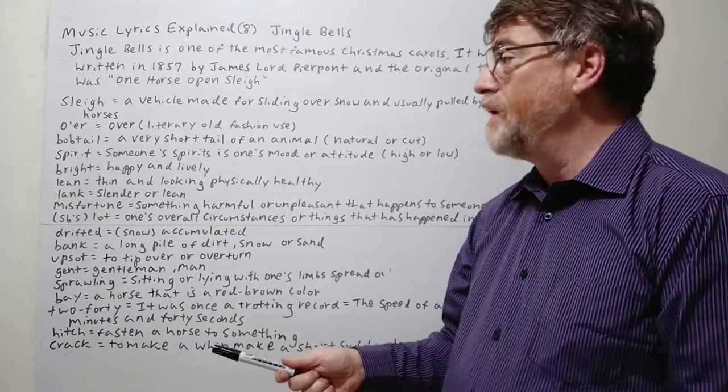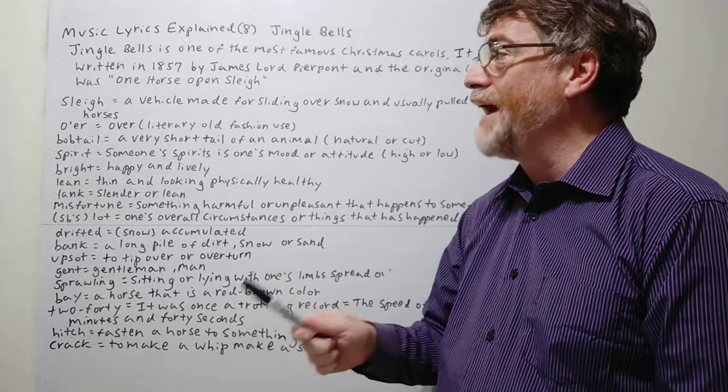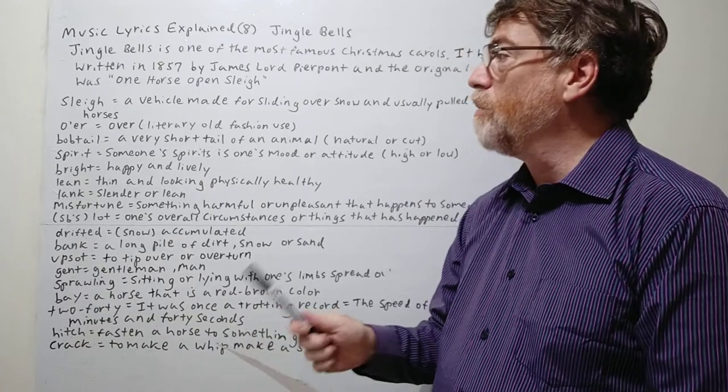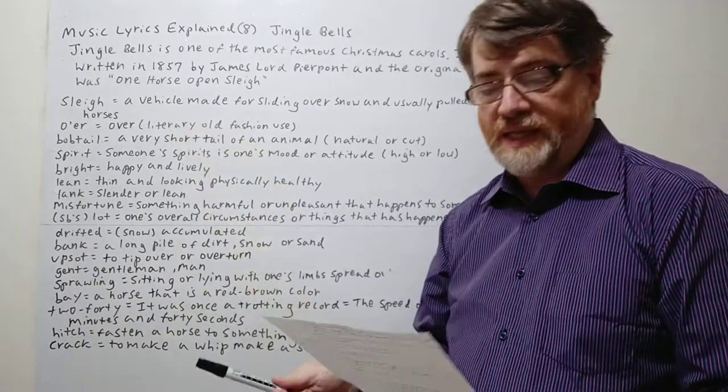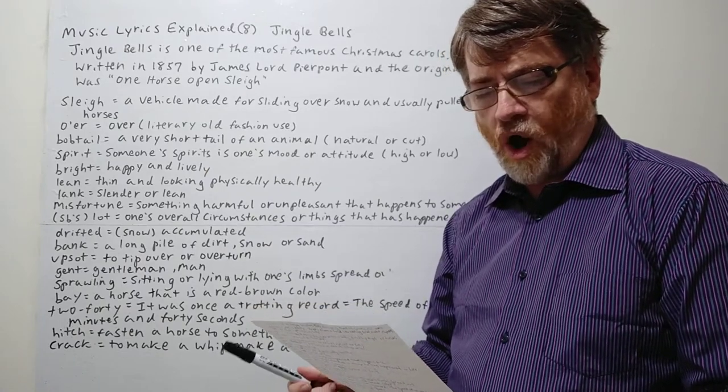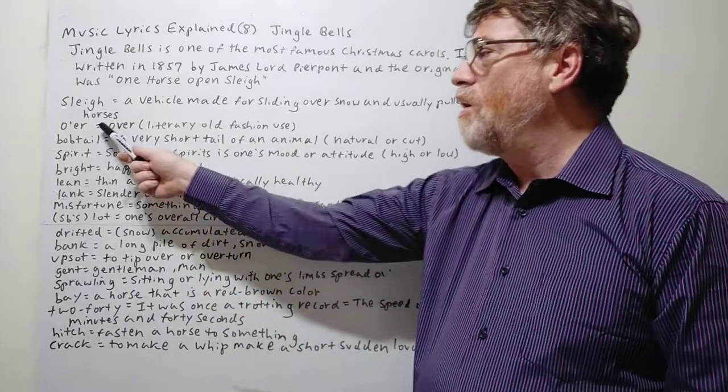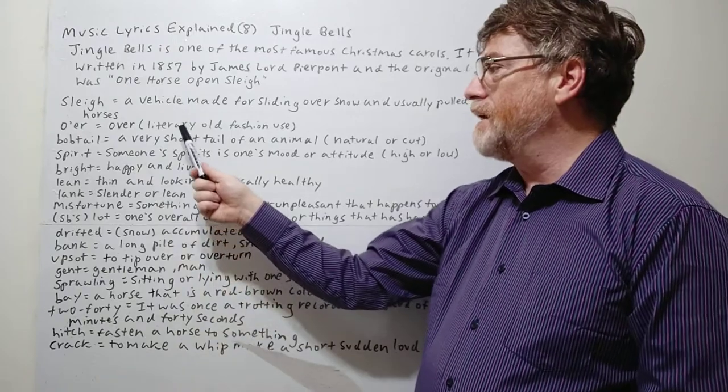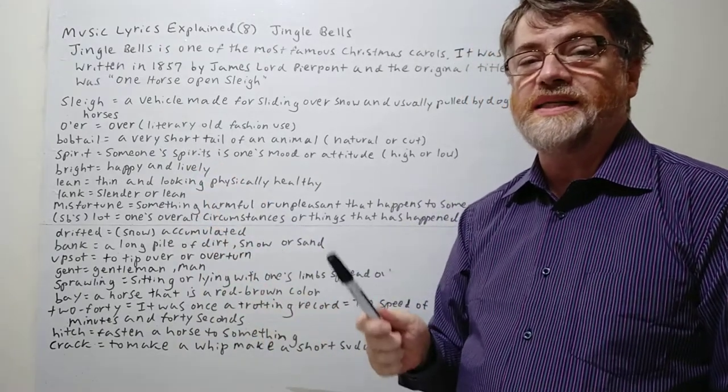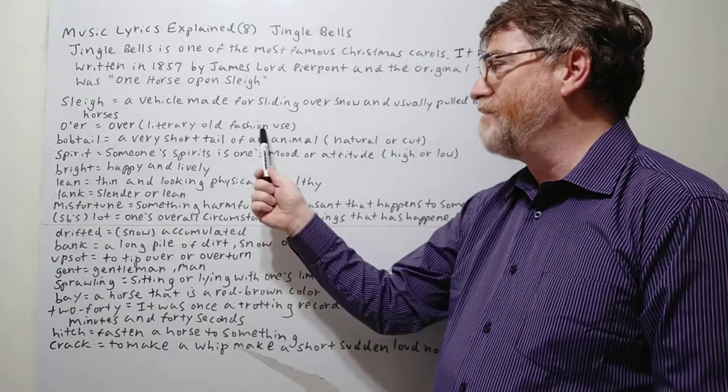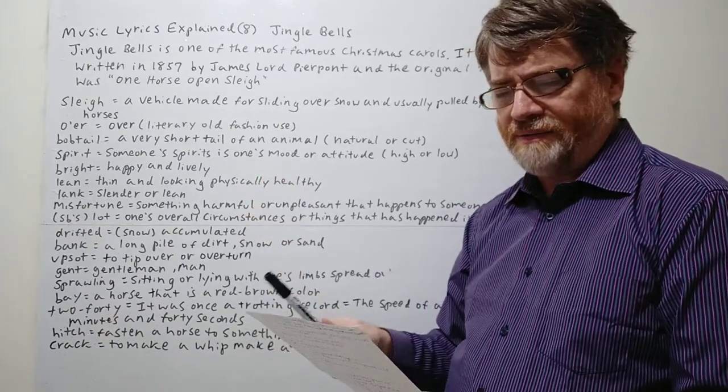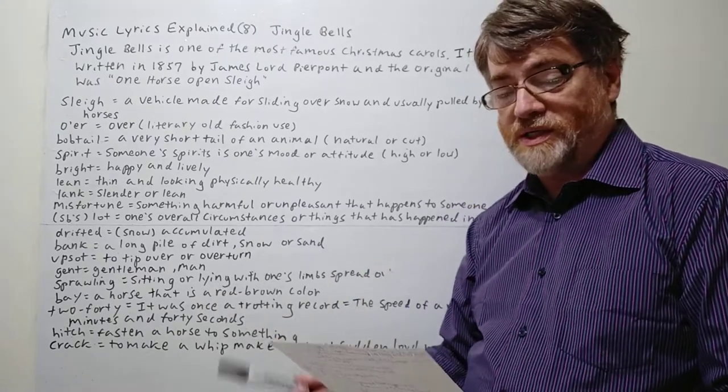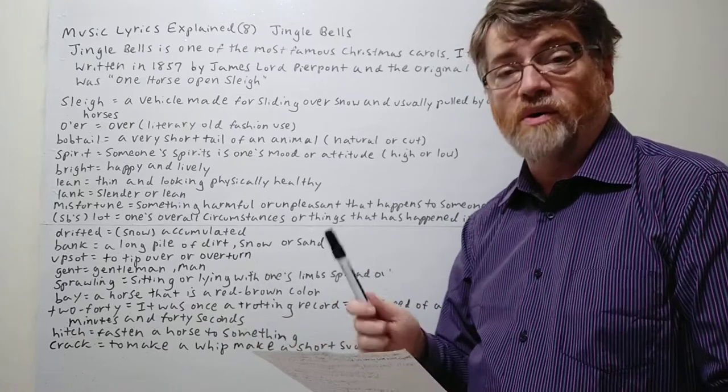Dashing through the snow. Here, if we say 'to dash,' dash means to go somewhere very quickly, very fast. So dashing through the snow in a one horse open sleigh. 'O'er' is kind of old English. We don't see this written so much anymore. It actually means 'over.' It's literary, meaning you're more likely to see it written, not spoken, and it's an old-fashioned use.